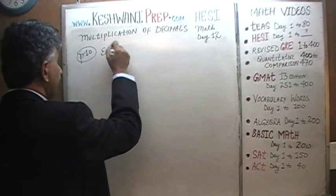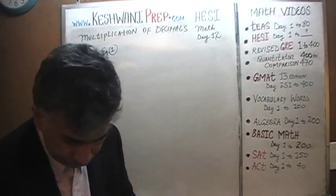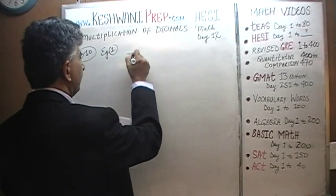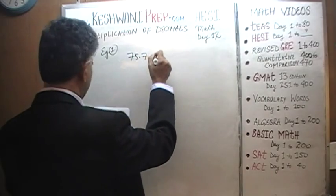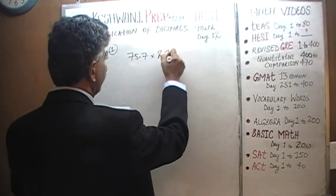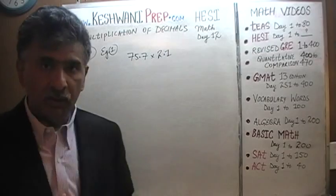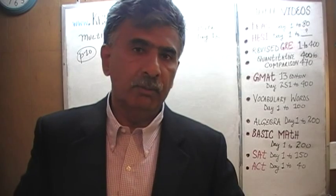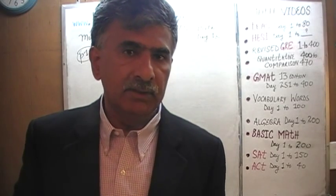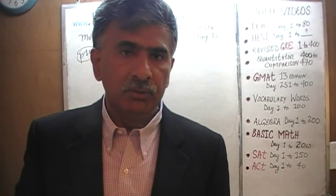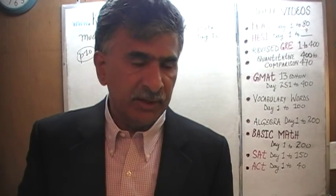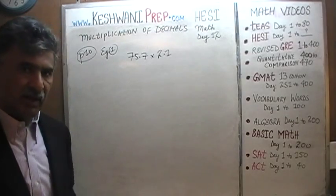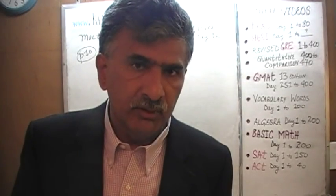Example number 1 is asking us 75.7 times 2.1. Now before we actually do the work, even though I realize it's a very simple, straightforward problem, I want you to get in the habit of looking at the exam in a certain way, so that when you get into a more complicated problem, you understand what's going on. Before we do any work at all, you must have some idea as to what sort of answer we are looking for.